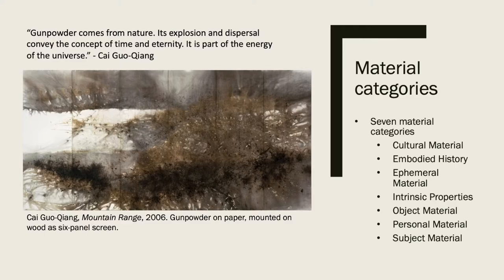Our material categories were determined based on what we learned going through the exhibition and from our interview with Oriana Cachione, who is the co-curator of the exhibition. Our list reads as cultural material, embodied history, ephemeral material, intrinsic properties, object material, personal material, and subject material.